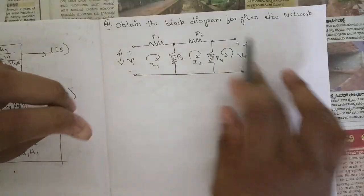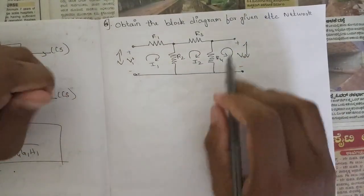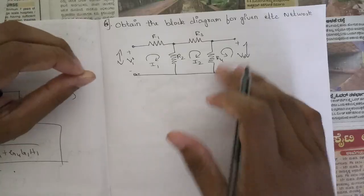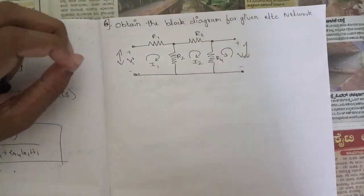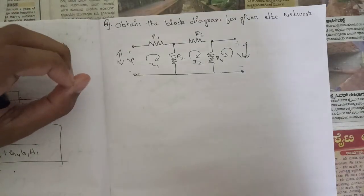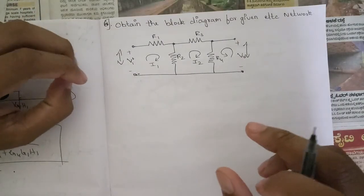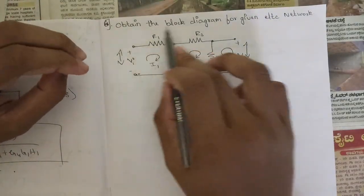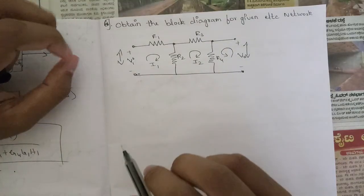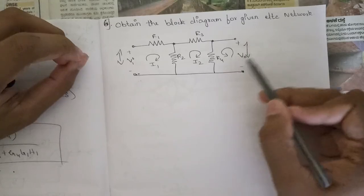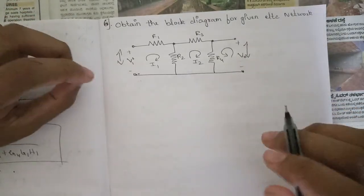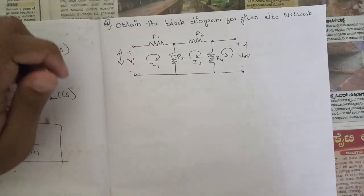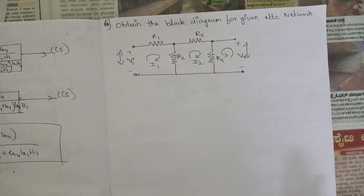They would be giving you an electric circuit or network. Using this circuit, first we need to calculate the loop equations or nodal equations. For those loop equations, we need to write the equivalent block diagrams, and combining all three equations, we need to obtain the final block diagram — having Vi as input and V_out as output.